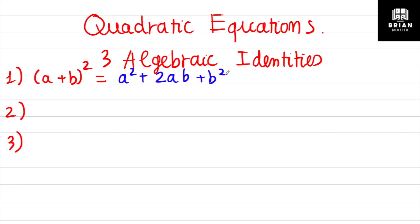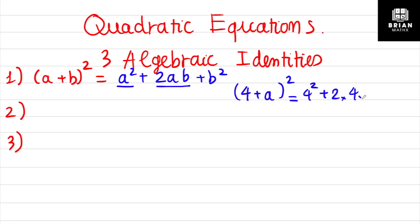To easily imagine this in your mind, think of the sum inside the bracket and the square outside — you have a first number and a second number. For example, the first number is 4 and the second number is a. When you expand, you get the first number squared, plus 2 times the product of those two numbers, plus the second number squared. So simplified, you get 16 plus 8a plus a squared.